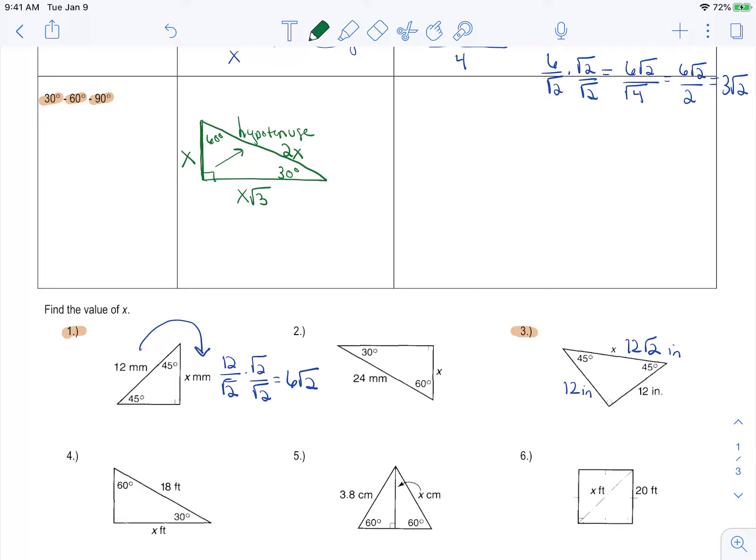So an example of this, I should make it look longer. And this will be my 30 degree angle. And this will be my 60 degree angle. So an example of this, making up some values, I'm going to say across from the 30, let's make it 5.